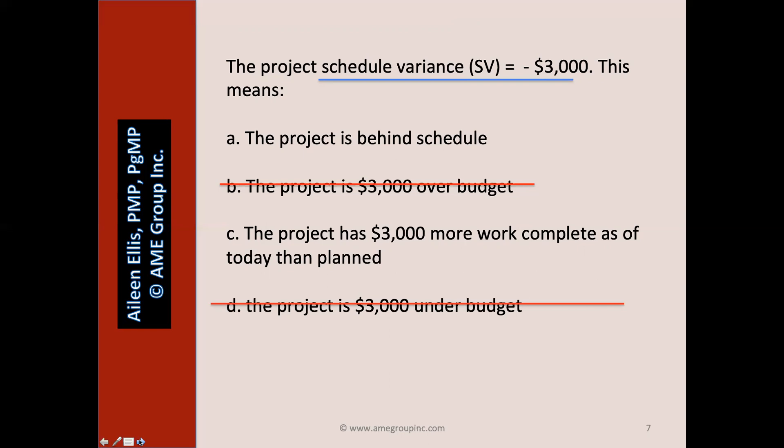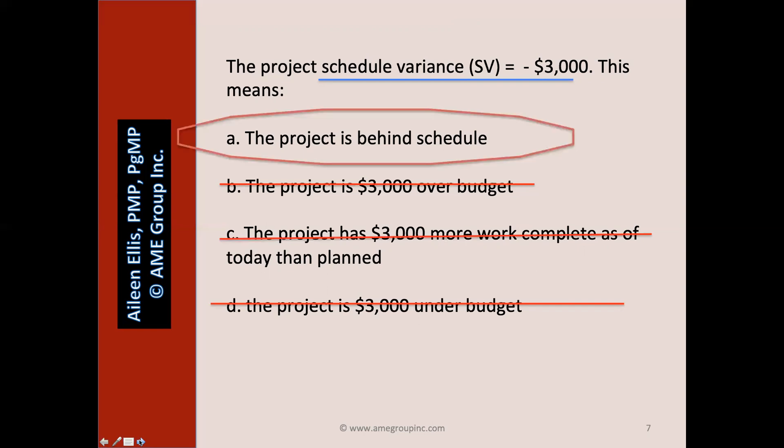So now we're left with A and C. The schedule variance is a negative number — that's bad; it means we're behind schedule. So A is the right answer. Answer C, 'the project has $3,000 more work complete as of today than planned,' is wrong — C describes a situation where we would be ahead of schedule, meaning our schedule variance would be a positive $3,000.